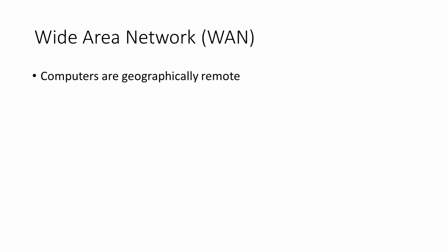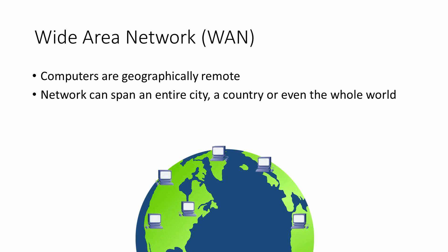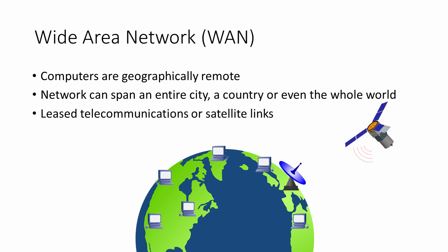A wide area network, or WAN, is much bigger than a LAN. The computers are geographically remote. The network might span an entire city, a country, or even the whole world. Devices on a WAN are usually connected using leased telecommunication lines or satellite links. Signals on a WAN will probably be encrypted, but it's still less secure than a LAN.